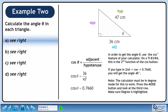In order to get the angle theta, use the inverse cosine feature of your calculator. On a TI-83/84, this is the second function of the cosine button. If you type in second cosine 0.7660, you will get the angle 40 degrees. Note that the calculator must be in degree mode for this to work. Press the mode button and look at the third row. Make sure degree is highlighted. The answer is 40 degrees.